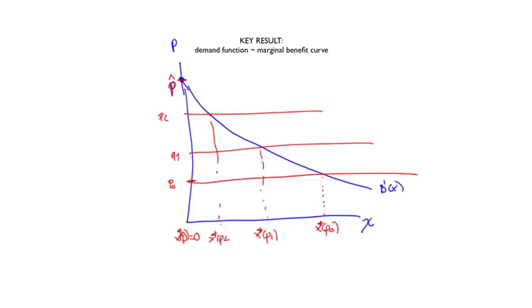So what do we get? We get that the curve that gives the demand is given by this green curve that I'm drawing here for you, that is the demand function at any possible price. And that's great, because it's telling you that if you know the marginal benefit curve, that we know how to calculate trivially, we can very easily identify or characterize the curve that gives you the demand function.